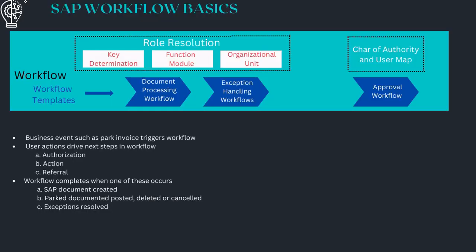Apart from the DP workflow, there is also an additional non-PO approval workflow. Both workflows together initiate the DP workflow as well as the NPO approval workflow. For the NPO approval workflow, all levels are fetched from the COA (chart of authority) and the user map. For the DP workflow, the relevant roles to which the workflow needs to be triggered are determined by either the function module or by an org unit.